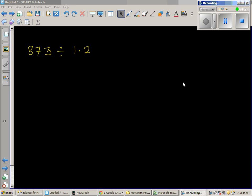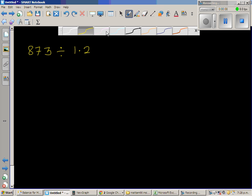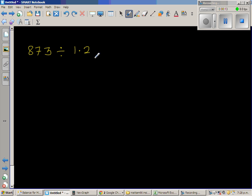Divide 873 by 1.2. Now, when you're dividing by a decimal, it's good to change this into a whole number.